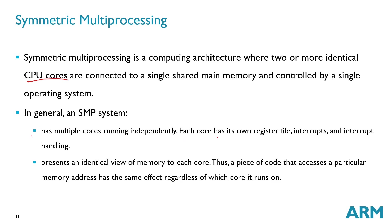Each core has its own register file, interrupts, and interrupt handling. But at the same time, we have an identical view of the memory. Each core accesses a particular memory address in the same way, having the same effect regardless of which core it is run on, because the memory and hardware resources are shared. Whether I access the memory or a peripheral from Core 0 or Core 1, there is no difference.